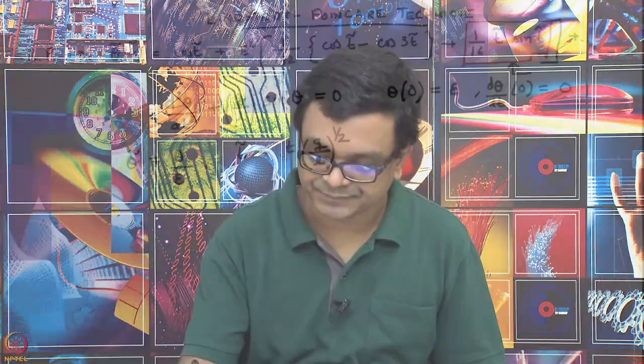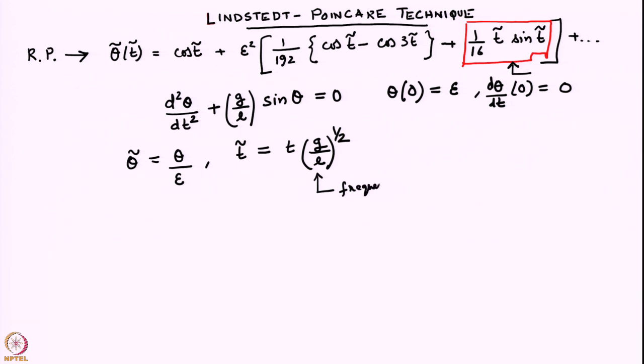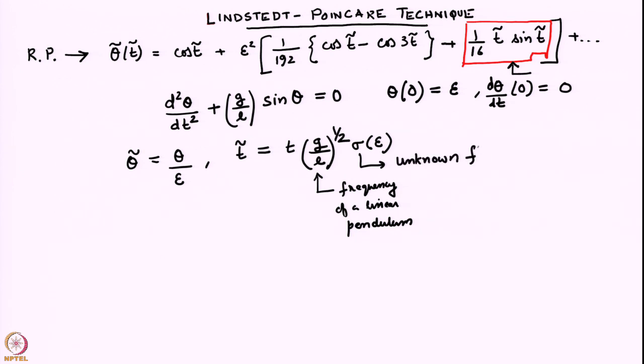Our technique has to be general enough to eliminate such terms at every order. With that in mind, I am going to introduce a modification to this procedure. The quantity (g/L)^(1/2) is the frequency of a linear pendulum. I will introduce a function sigma(epsilon) here. This is a non-dimensional unknown function whose purpose is to take into account that the actual frequency of the pendulum depends on epsilon.